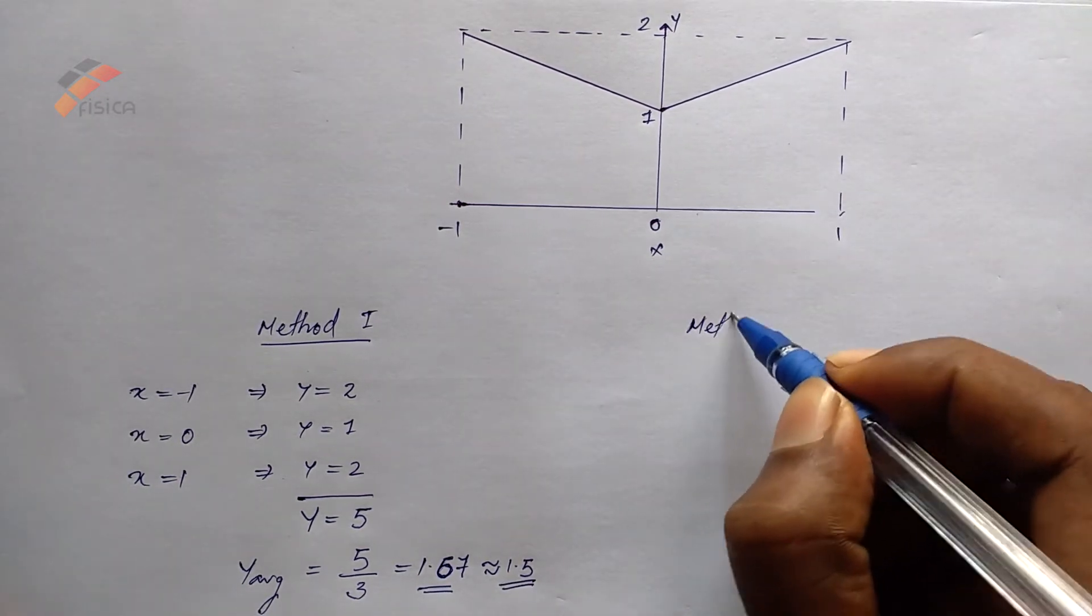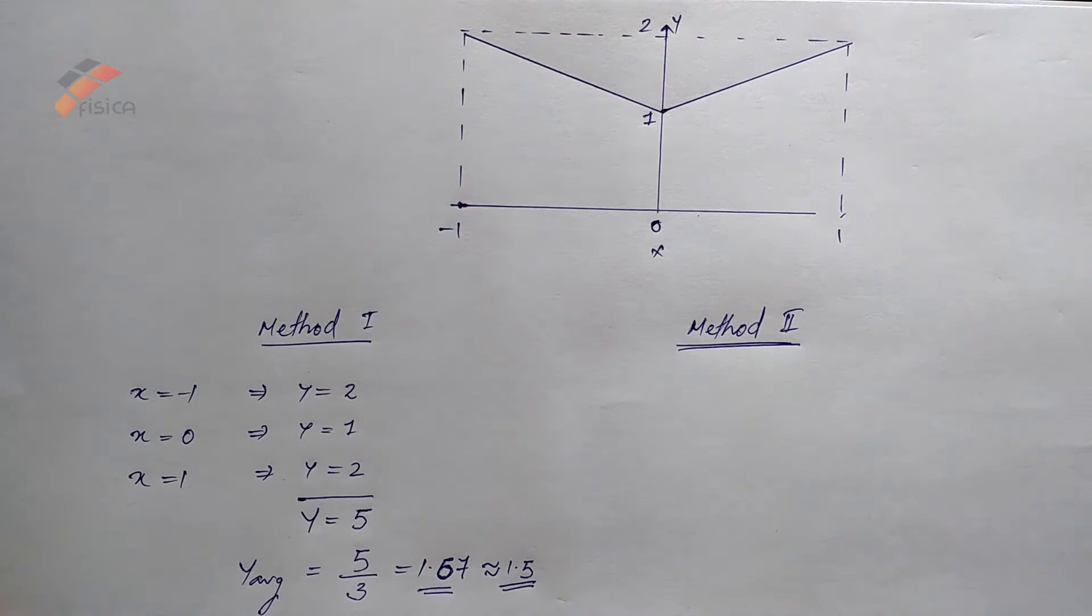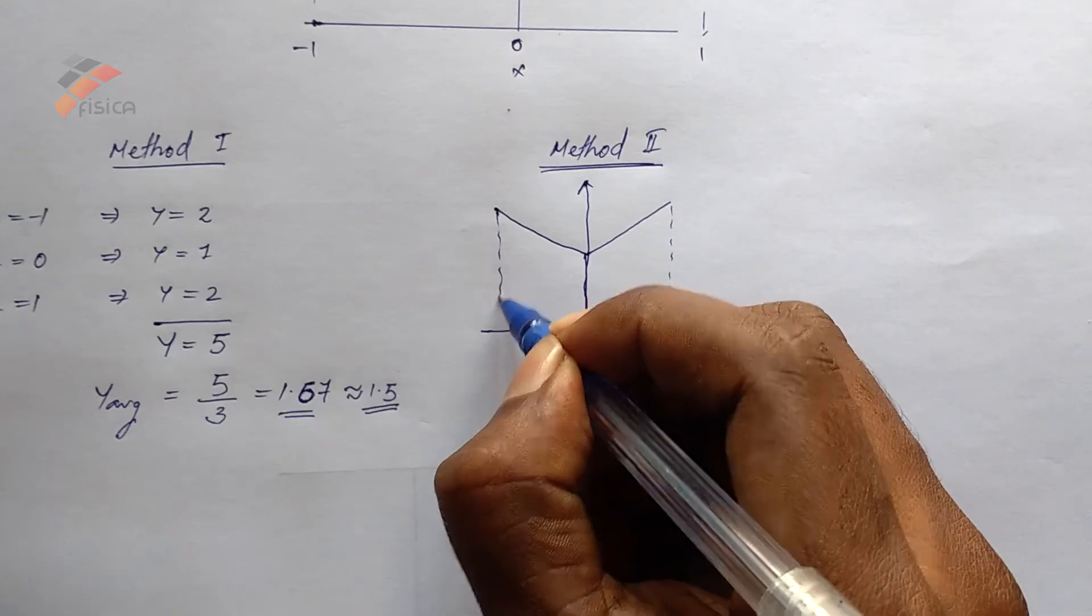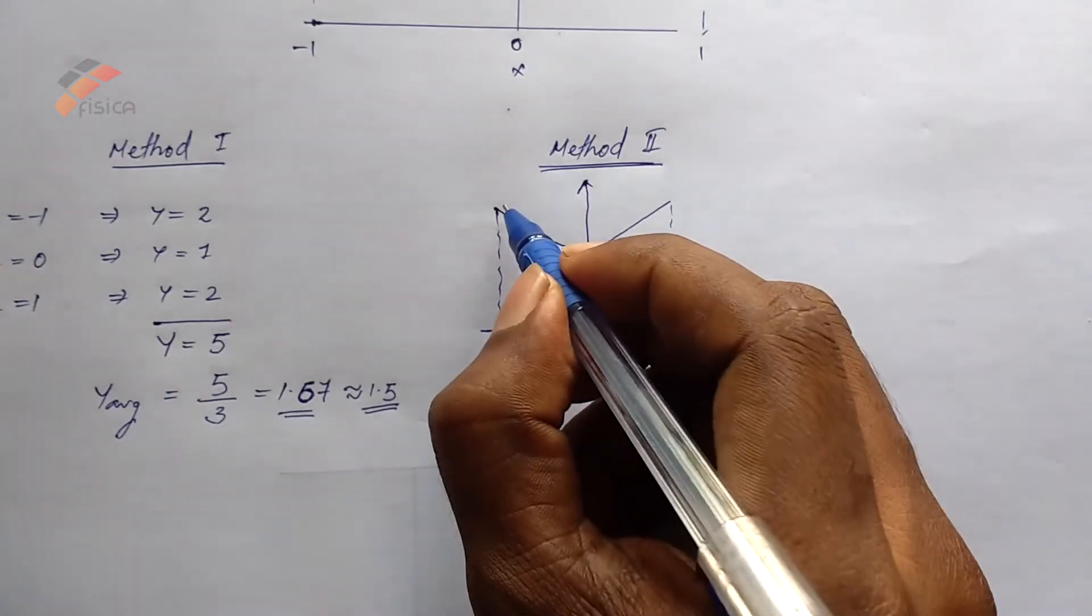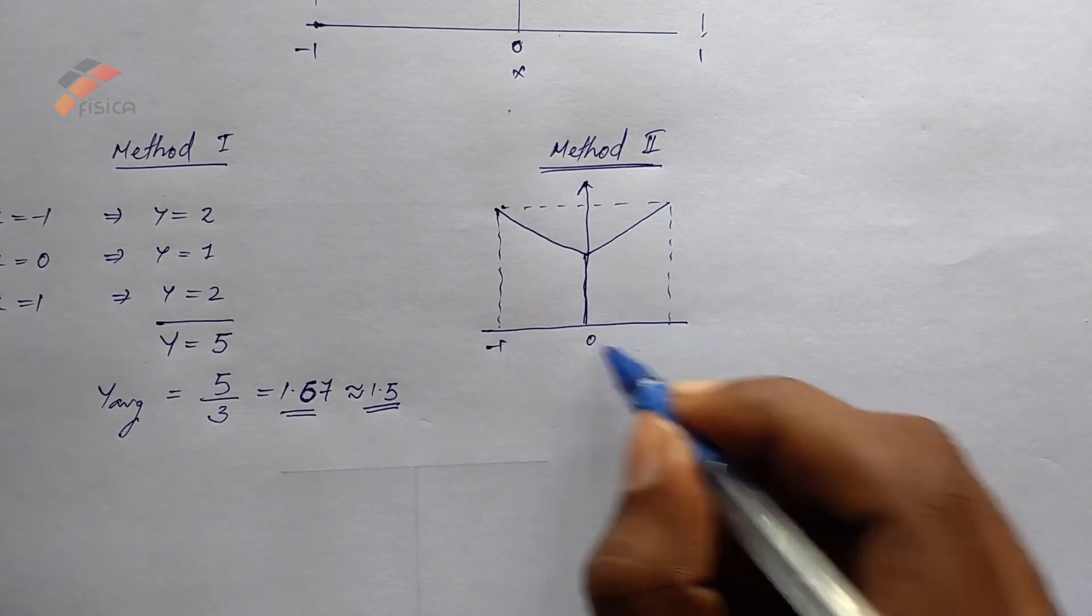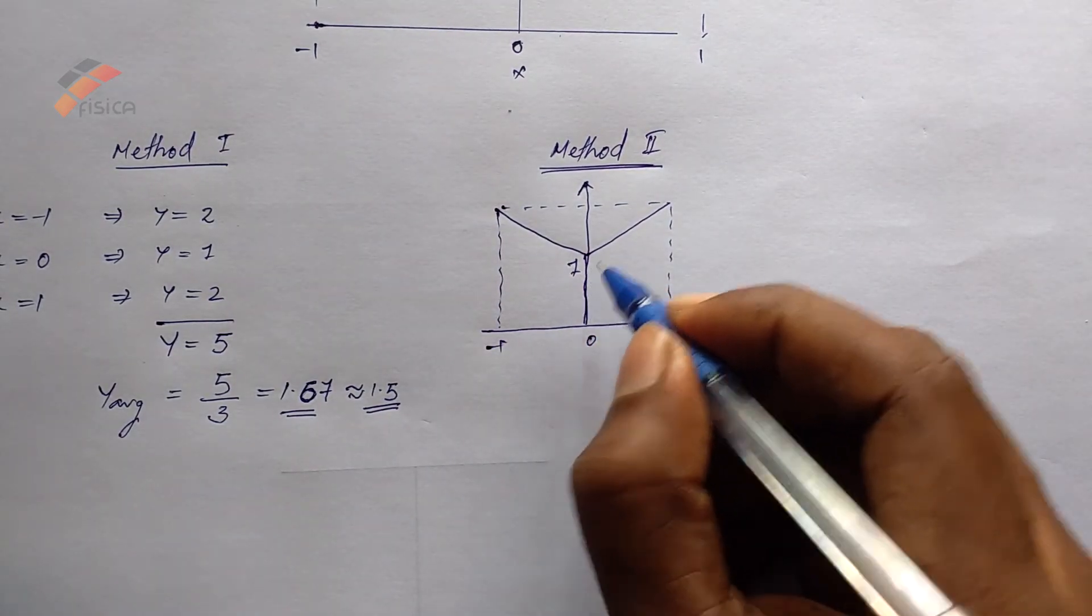Method 2. This is the best method. And using this method, we get the exact answer. Here, this is our problem figure. Minus 1, 0, 1, 1, 2.